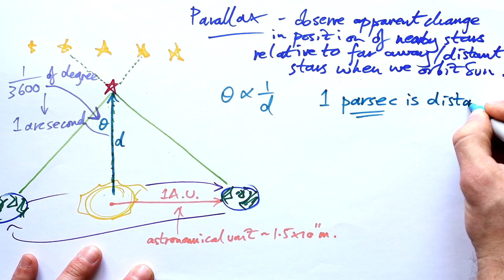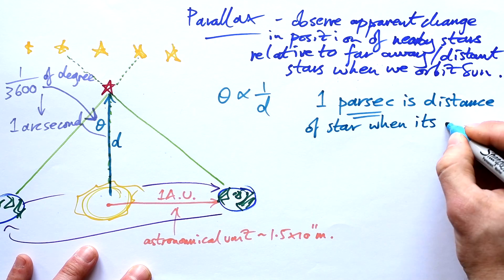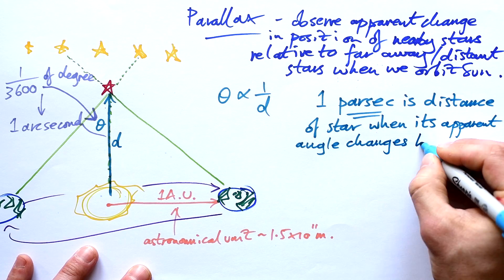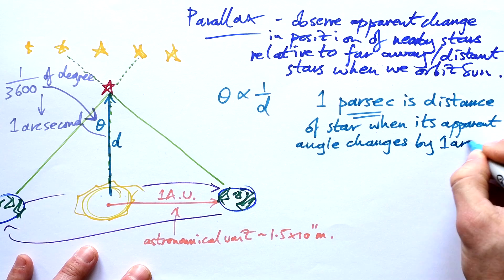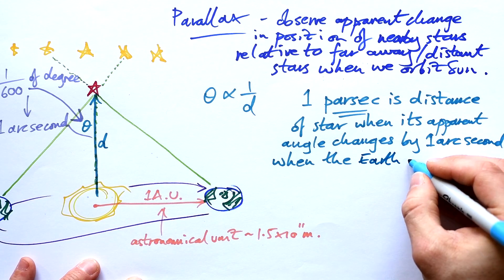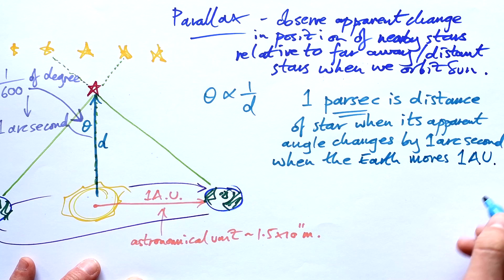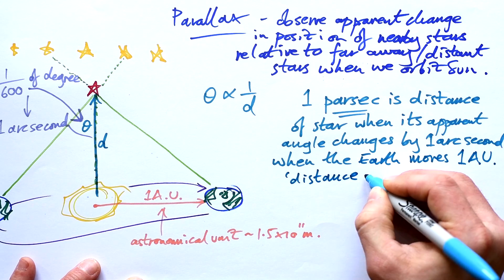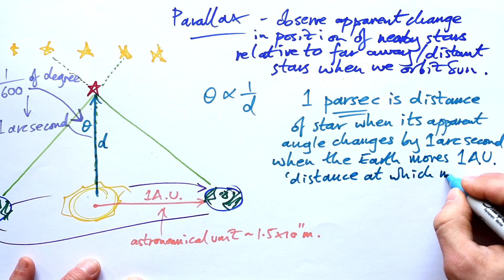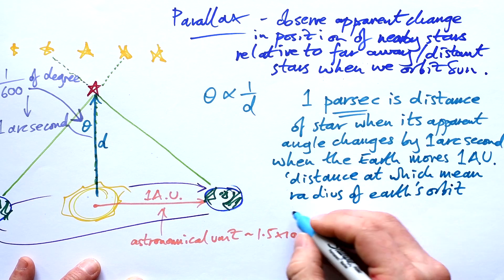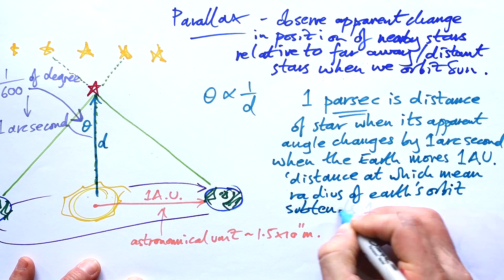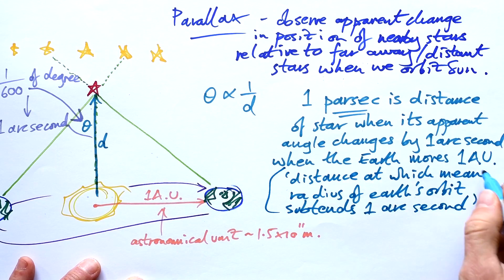So one parsec is distance of star when its apparent angle changes by one arc second when the Earth moves one AU, one astronomical unit. Better way of defining it is distance at which mean radius of Earth's orbit subtends one arc second.